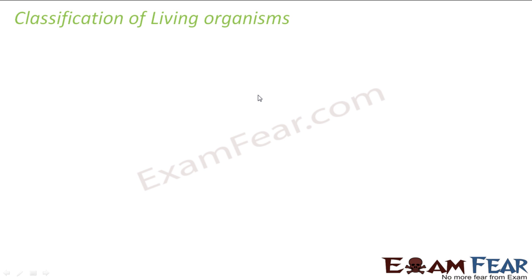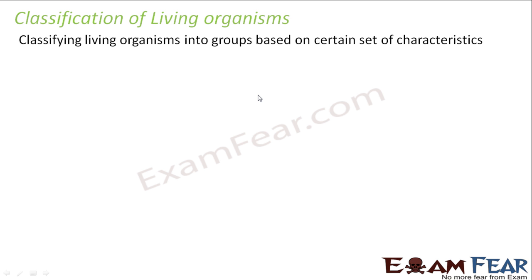As a quick recap, classification is nothing but classifying living organisms into groups based on a certain set of characteristics. We have so many different types of organisms on this earth that it is really impossible to study each of them individually. So what we do is group similar organisms together and study that group. Once you know the basic characteristics of a group, you roughly know about all the organisms which fall in that group.